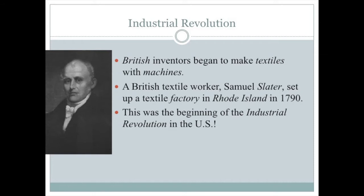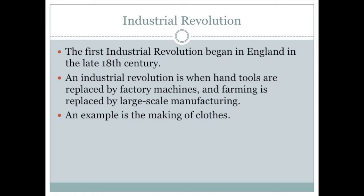Although industrialization started in England, one Samuel Slater would memorize the plans of the mechanized looms and bring them over to the United States, where he set up his own factory in Rhode Island in 1790, beginning the Industrial Revolution. The Industrial Revolution began in the late 18th century in England and is when hand tools and individual work are replaced by factories and machines, and farming is replaced by large-scale equipment — which is why we can afford things like a $12 t-shirt today.